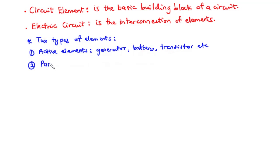Now let's define what passive elements are. Passive elements on the other hand do not generate electrical energy or power to the circuits they are connected to. What they do is they receive electrical energy and they either store it, dissipate it, or absorb it. Passive elements do not also need any form of electrical power to operate. Examples of passive elements: we can talk of a resistor, an inductor, and a capacitor.